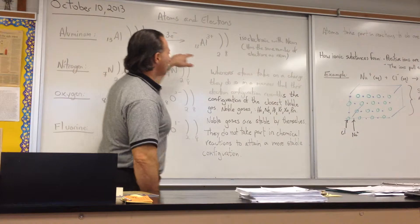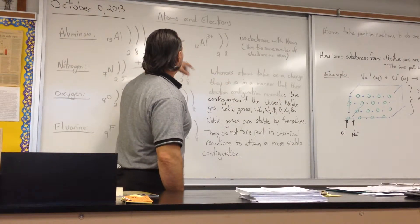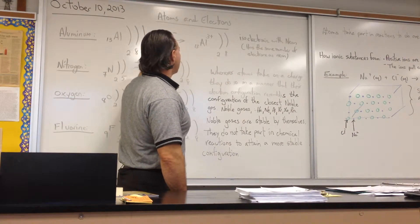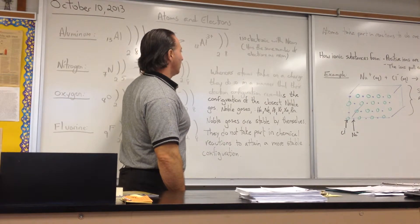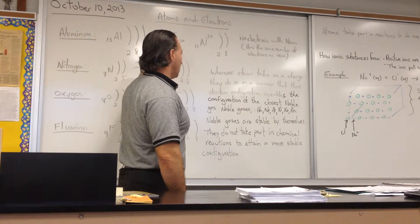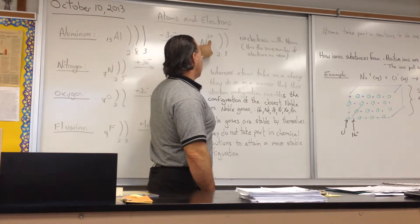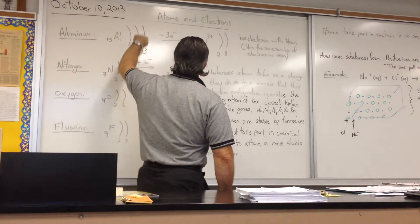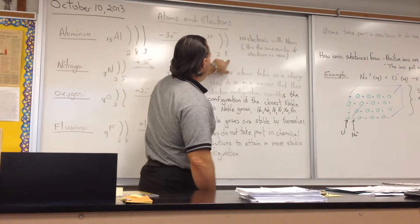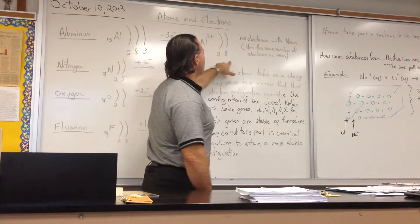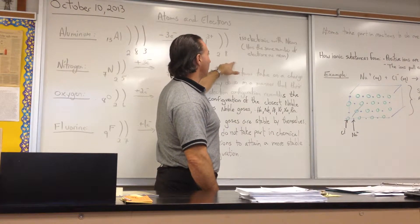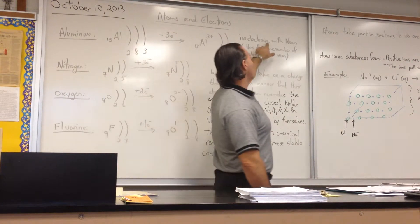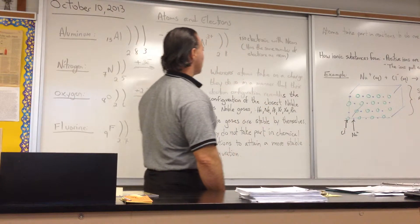In the case of aluminum, the closest noble gas is neon. So, aluminum will typically lose three electrons when it forms a charged substance, an ion, and when it does that, it has a plus three charge, and those three electrons will have been lost in that outer shell. So, now, it resembles the structure of neon, the electronic structure of neon. So, it becomes isoelectronic, just meaning it has the same number of electrons as neon.